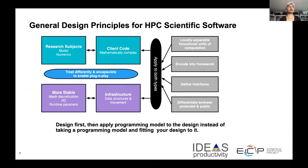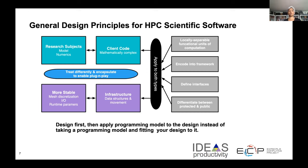Here is a schematic for the general design principles that can be applied to HPC scientific software. The science model and numerical methods are the client code — mathematically complex and fast changing. The infrastructure code — mesh discretization, IO, runtime parameters — determines data layout, data structures, data movement, and runtime environment. They should be treated differently and encapsulated separately to enable good plug-and-play capability. Each should be in locally separable functional units of computation, encoded in a framework providing the backbone, with interfaces defined and exercised appropriately, differentiating between protected and publicly available components.